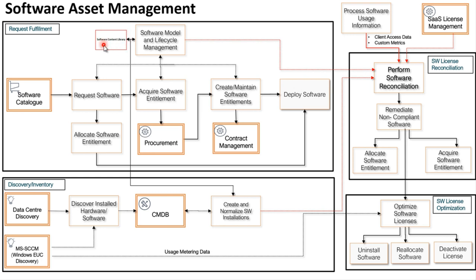The software content library is a part of all the components and is not specific to request fulfillment. ServiceNow maintains the content library, which contains a list of all standard software definitions including publisher, part number, license metrics, downgrade rights, suite information, and so on. The different software models generated from the content library can be published to your service catalog and used for the request fulfillment process.